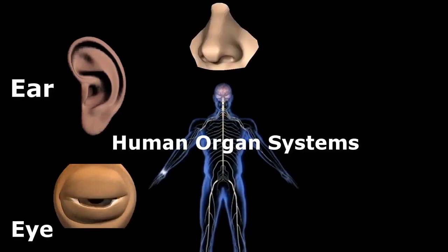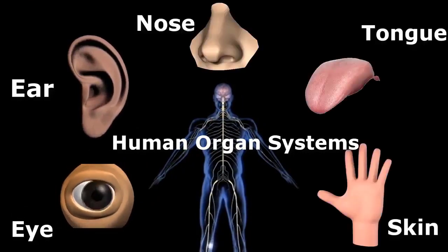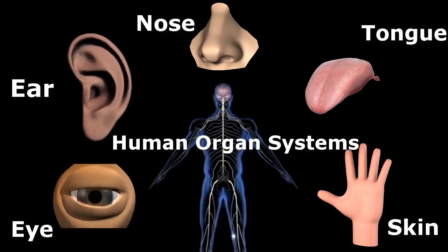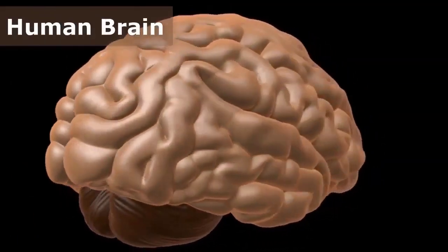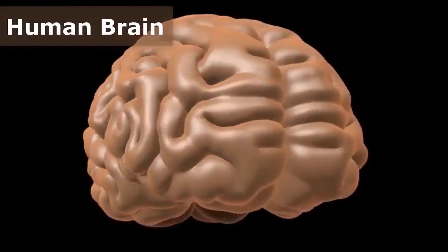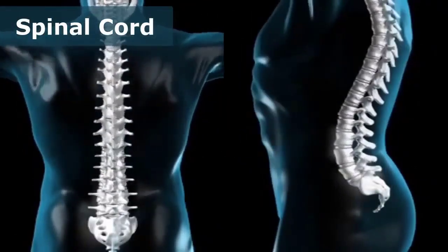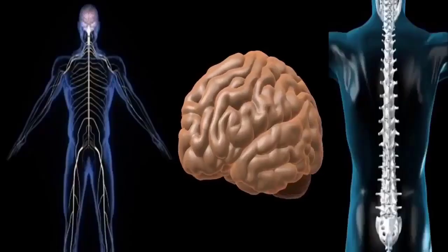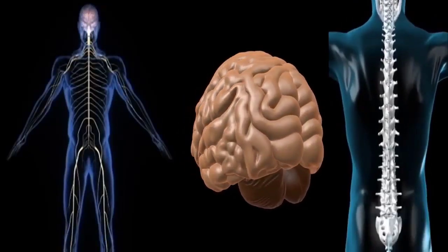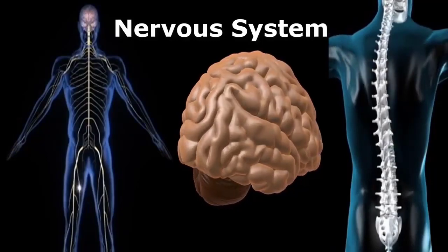Pishli jamaat meh hum insani jism ke mukhtlif organs aur organ system ke baare meh pardhti hain. Is baap mein hum human brain, spinal cord, and nerves woghira ka mutala karenge. These organs form a system called asbionism or nervous system.